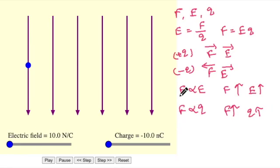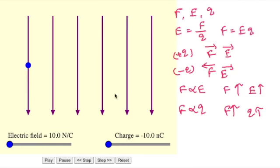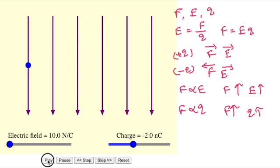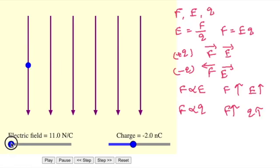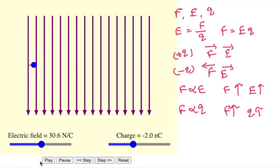Now let us first check how varying the electric field affects the force. I am fixing the charge at around minus 2 nanocoulomb. The initial electric field is 10 Newton per coulomb. Let me play the animation — this is the force produced. Now I will increase the electric field to 30 Newton per coulomb. See — initially it was deflected up to a certain point, but now it is deflected a greater distance because as I increased the electric field strength, the force on the negative charge also increased.